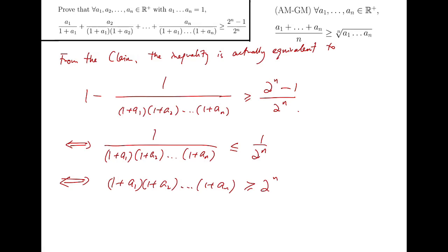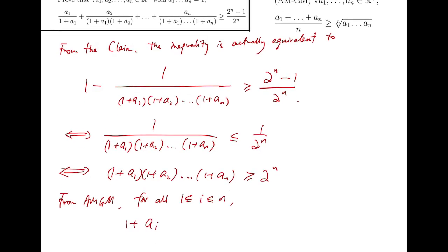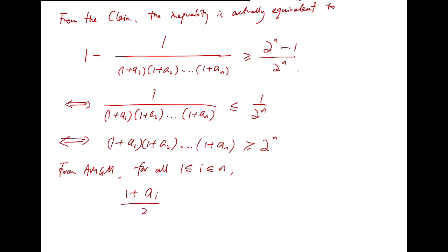If we apply this result on each of 1 plus ai for all i from 1 to n, then 1 plus ai divided by 2 is greater than or equal to square root of 1 times ai, which is just ai. And so, 1 plus ai is at least 2 times square root of ai.